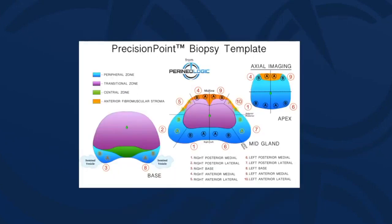Now to the really exciting business of transperineal biopsy. Here's a biopsy template designed after doing about 2,000 biopsies. When we first started, we didn't know where to stick the needle, so we biopsied in rows and columns mimicking a grid stepper. We realized after analyzing data that there were areas of the prostate that just did not harbor cancer — cancer could grow into these areas but didn't originate there.